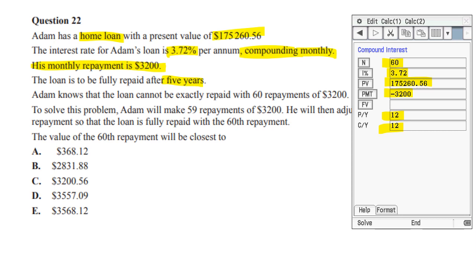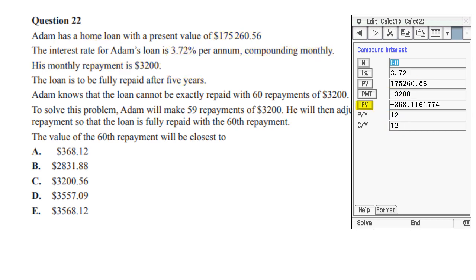When we press our FV, we get this number: minus 368.1161774. Let's just do some rounding on that. The one looks at the six, the rest of this doesn't matter, and that says we have to go up, so we get minus $368.12.